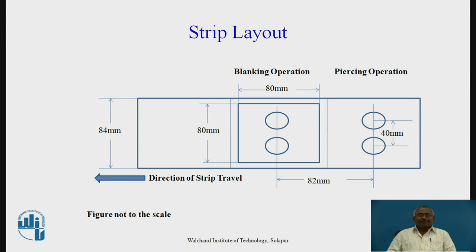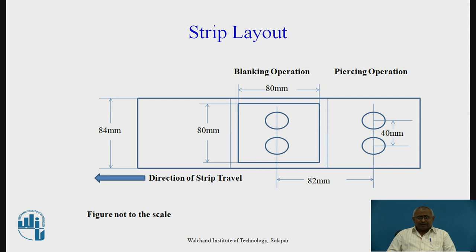The strip layout is shown in the sketch — note it is not to scale. The strip is traveling in the direction shown by the arrow. The width of the strip is 84 mm. We have selected strip stock of width 84 mm because we have left 2 mm on either side of the component. As the component width and length are both 80 mm, the optimum width of the stock is 84 mm. In between two components, we have a distance of 82 mm, which decides the pitch of advancement.